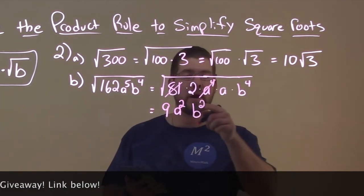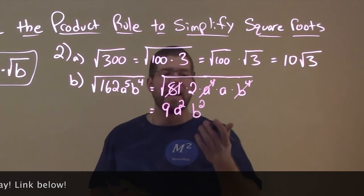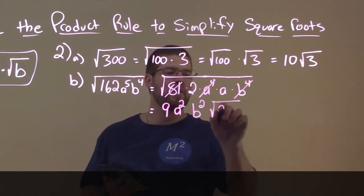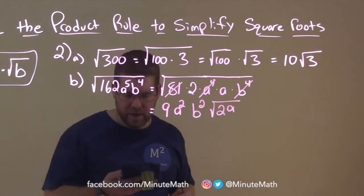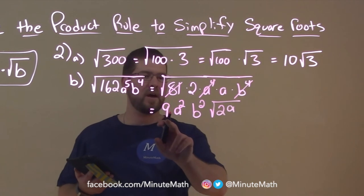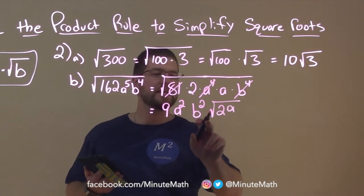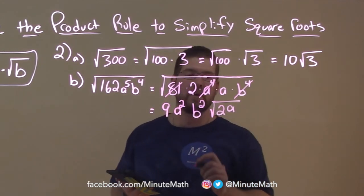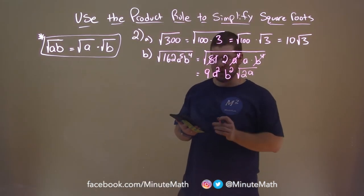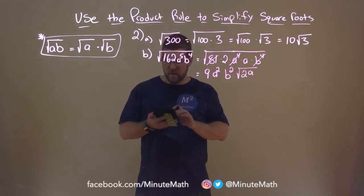Remember, square root of B to the 4th power is B squared. And now, what we're left with is just what's on the inside, the square root of 2A. And there's nothing else I really can simplify this anymore, right? We have 9A squared B squared times square root of 2A. And again, there's multiplication going in between each term.